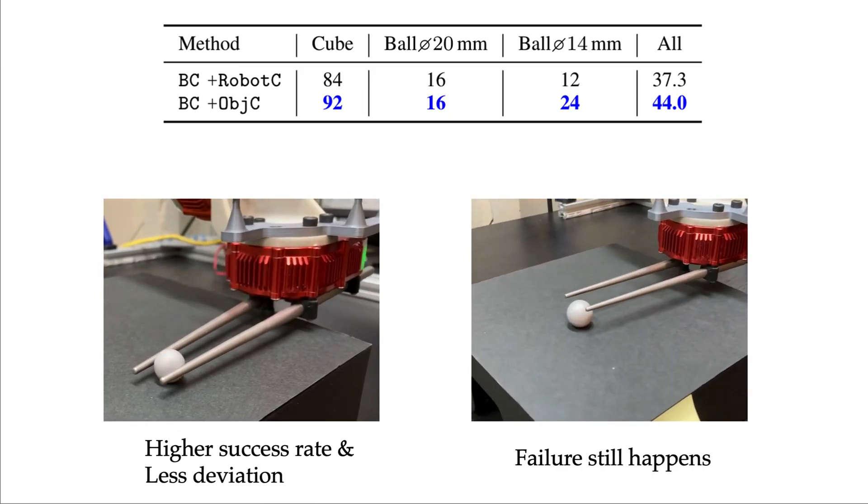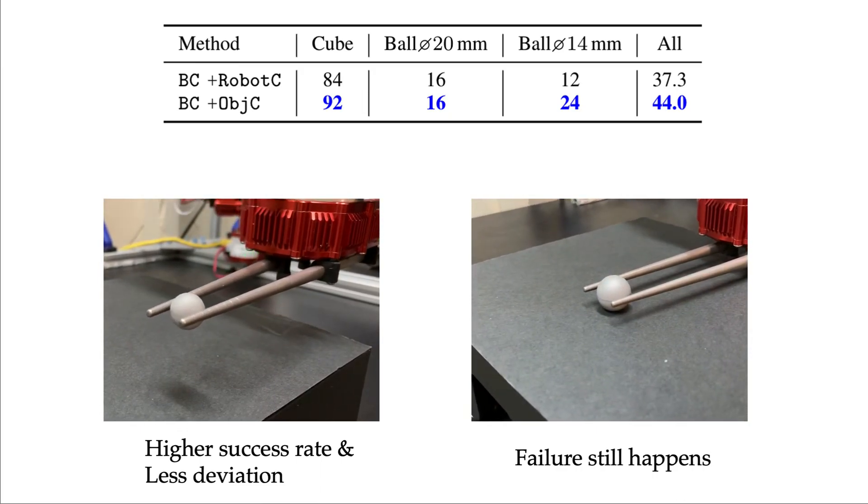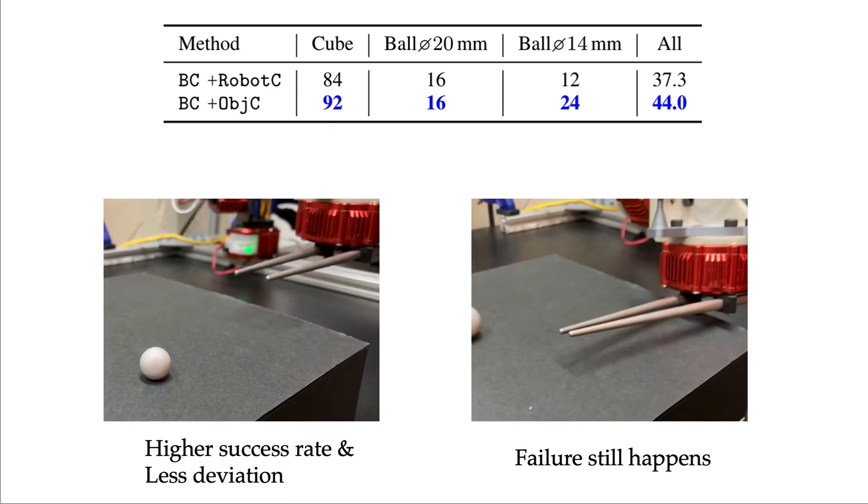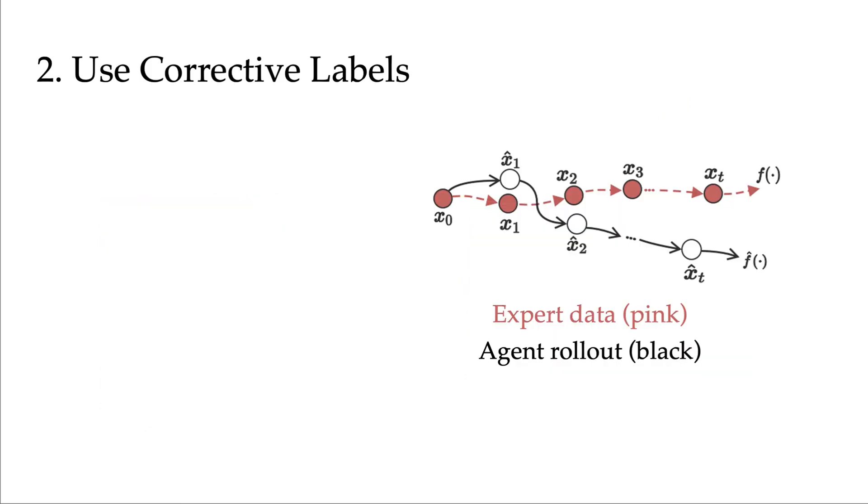However, failures can still happen. In both success and failure cases, the chopsticks can still be rotating as the agent moves. So we need a way to teach the agent how to react when it deviates from a demonstration. To do that, we propose to use corrective labels for deviated states.